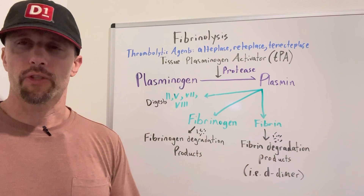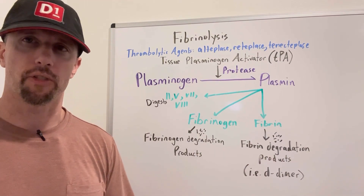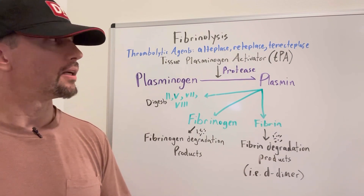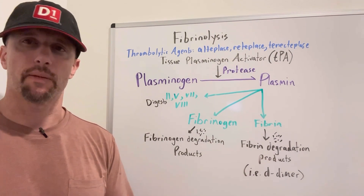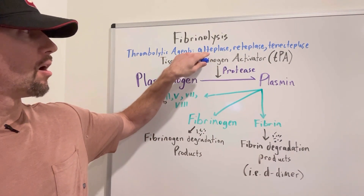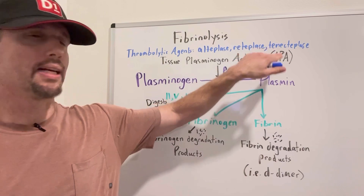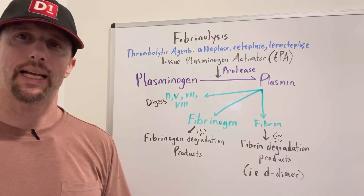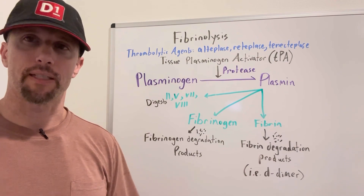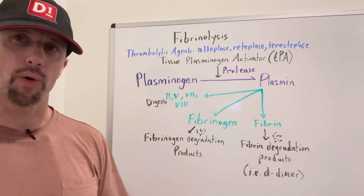We can administer TPA in an emergency setting under certain conditions as a thrombolytic agent. Exogenous administration of TPA can typically be given as alteplase, reteplase, or tenecteplase. These are recombinant DNA-created tissue plasminogen activators, and they can go and dissolve clots.